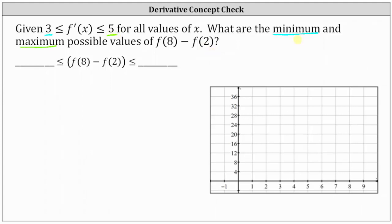Let's begin by determining the minimum possible value of f of 8 minus f of 2, and assume that f prime of x is equal to 3 for all values of x. This means the slope of the tangent line would always be 3, and therefore the graph of f of x would also have to be a line with a slope of 3.